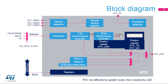The RTC clock is first divided by a 7-bit programmable asynchronous prescaler, which provides the CKAPRE clock. Most of the RTC is clocked at the CKAPRE frequency, so in order to reduce power consumption, it is recommended to set a high asynchronous division value. The default value is 128.